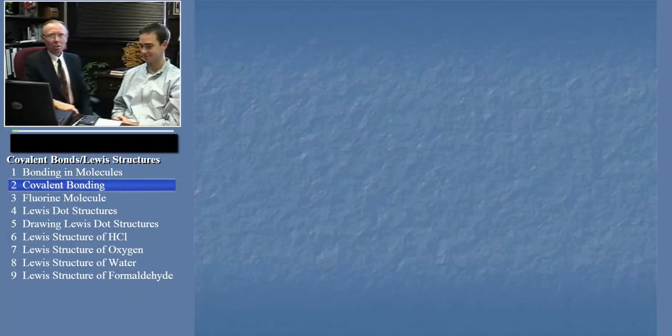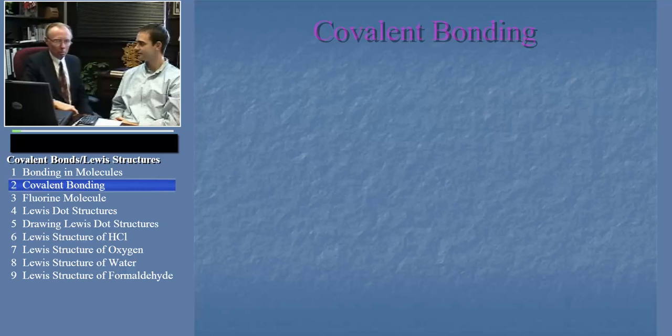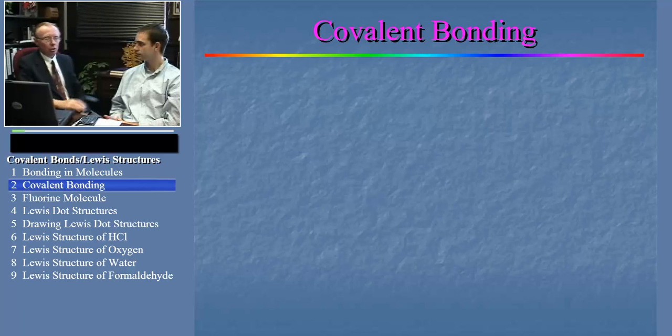Well, before we start, we really need to talk about covalent bonding. Now, covalent bonds result from the sharing of electrons between atoms, and in this sense, they're different from ionic bonds.